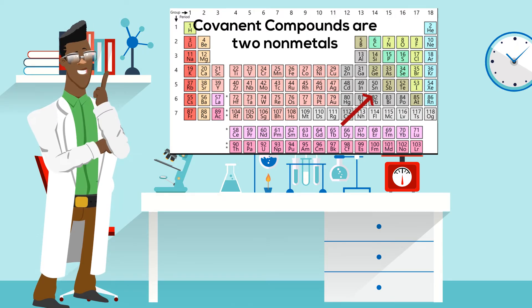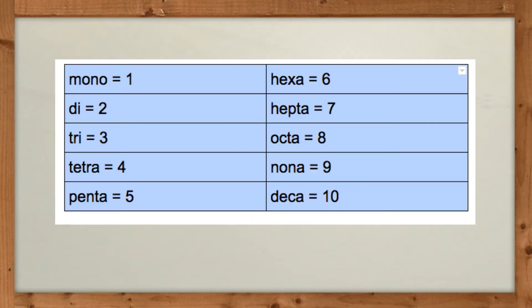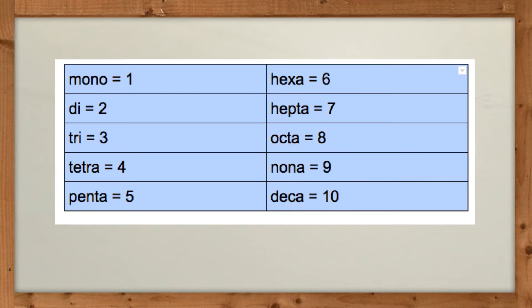Covalent compound formulas use prefixes. The prefixes go like this: mono is 1, di is 2, tri is 3, tetra is 4, penta is 5, hexa is 6.